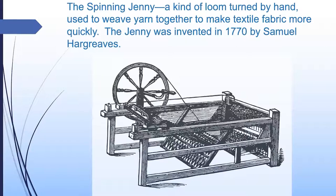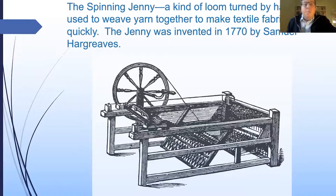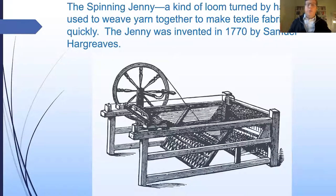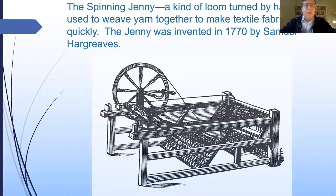At this very same time, another invention took place called the spinning jenny, invented by a weaver, businessman, and inventor named Samuel Hargreaves. Around the same time that James Watt perfected the steam engine, Hargreaves invented the spinning jenny. Like the steam engine, it wasn't entirely new — it was an improvement on an earlier invention called the spinning mule. Essentially, it's a kind of loom used to weave yarn together into fabric, producing sheets of fabric that could then be sold wholesale or to clothing manufacturers.